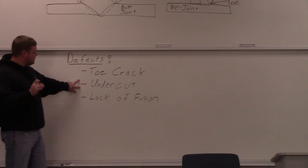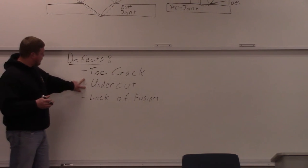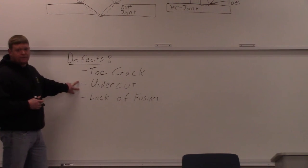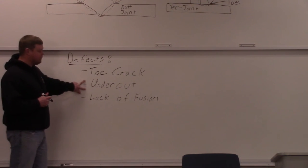Undercut is a little indent on the toes of the weld. This is probably one of the hardest things to get rid of in welding. So that's why knowing where the toe is is so important because you're always looking for undercut.